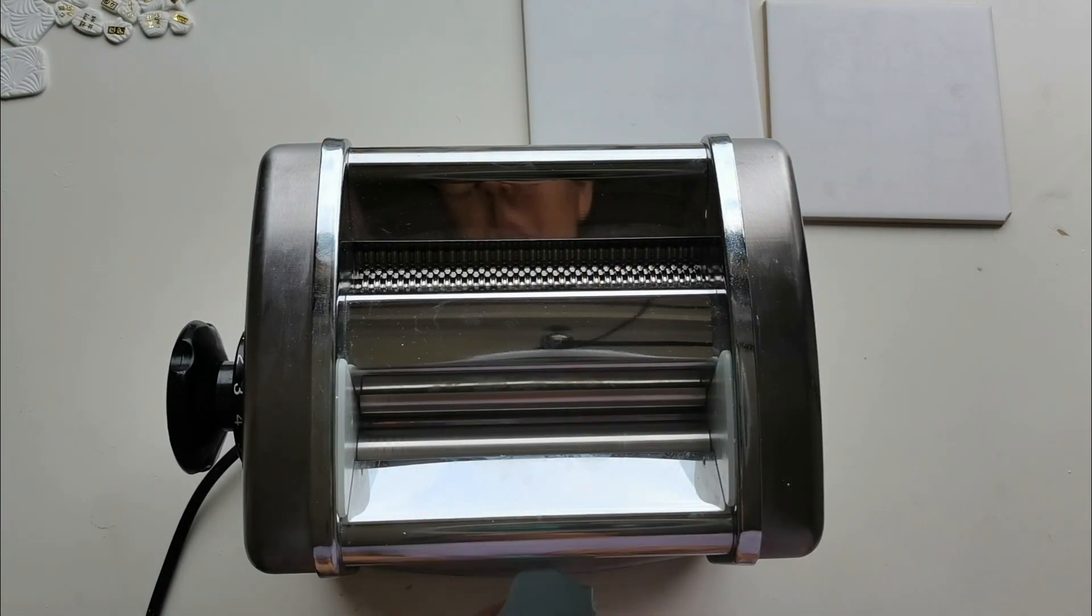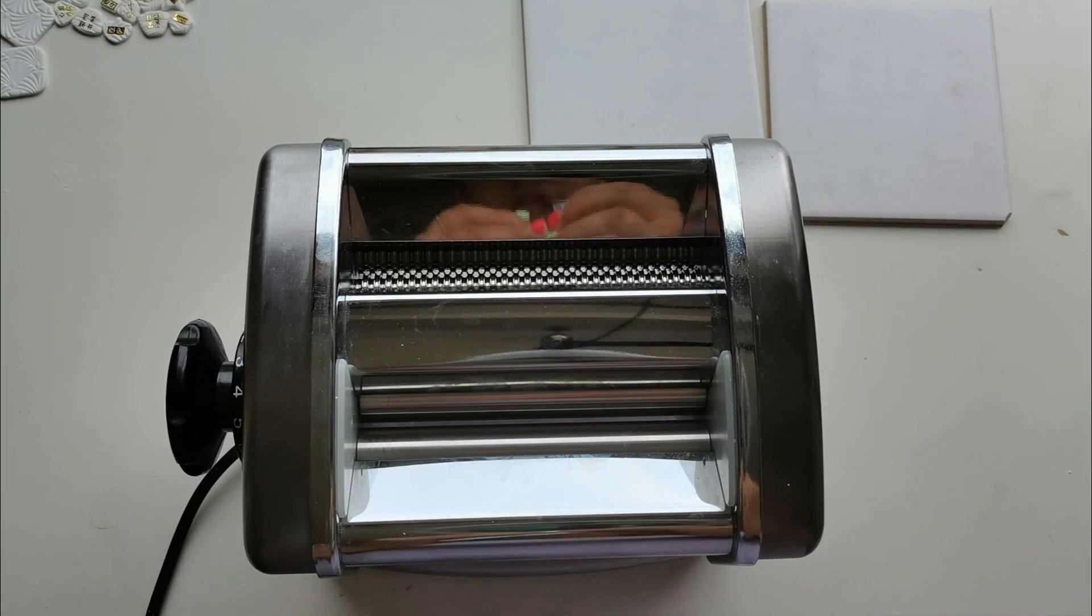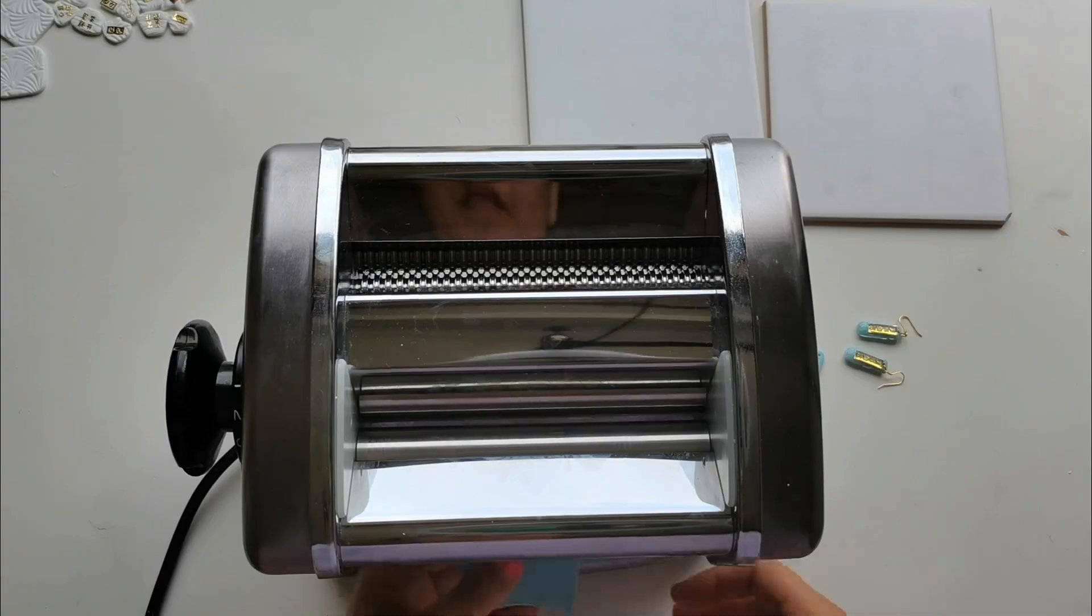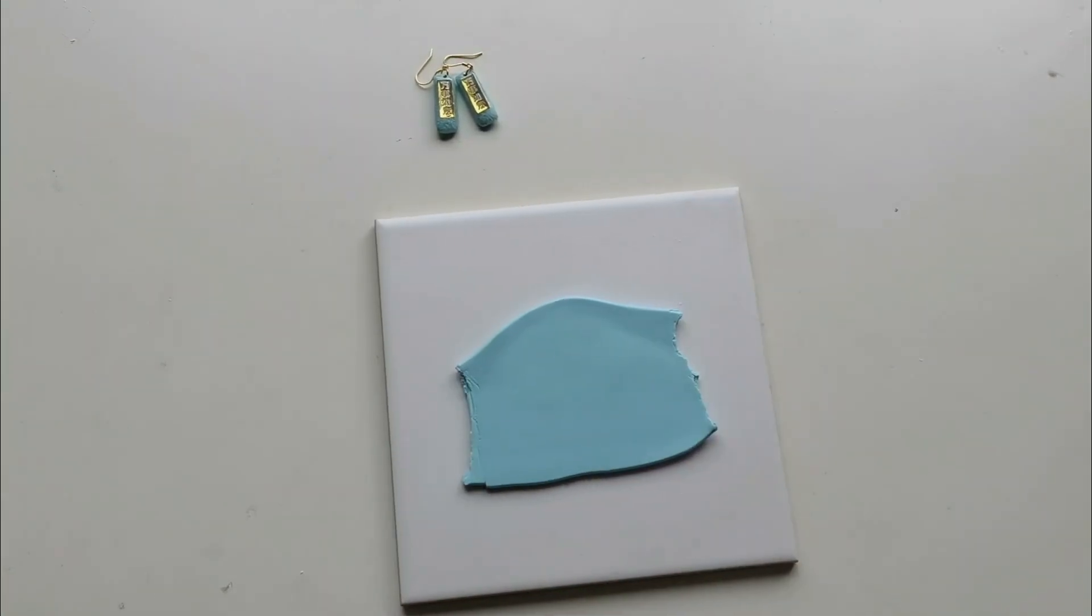So we're going to start with our custom-made baby blue polymer clay. We mix this with white, blue, and yellow, a bit of yellow to make that little turquoise-y color.